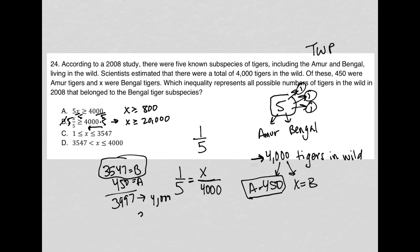I like choice C a lot better than A, because A says it has to be greater than or equal to 800, while C says it's a big range — somewhere between 1 and 3,547. Choice D says X is between 3,547 and 4,000, which is impossible because we know we have 450 Amur tigers. For Bengal to be greater than 3,547 is actually impossible, because that would squeeze out the Amur population the question told us we have. So the best answer is choice C.